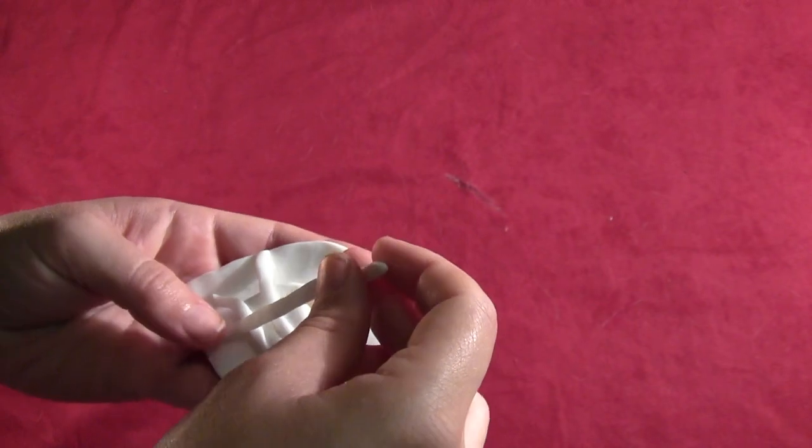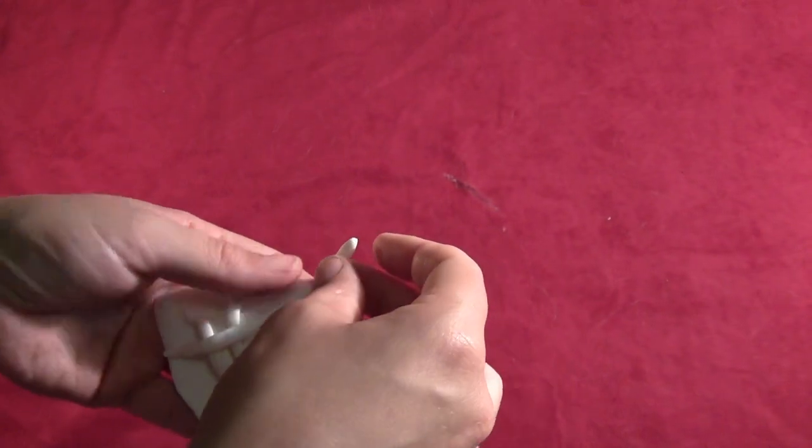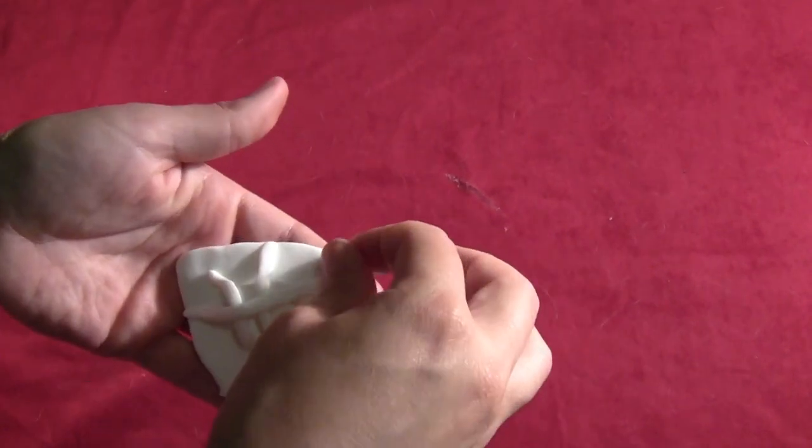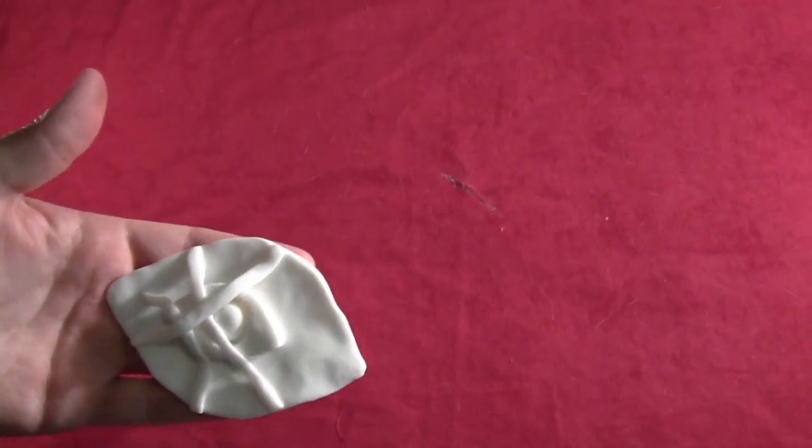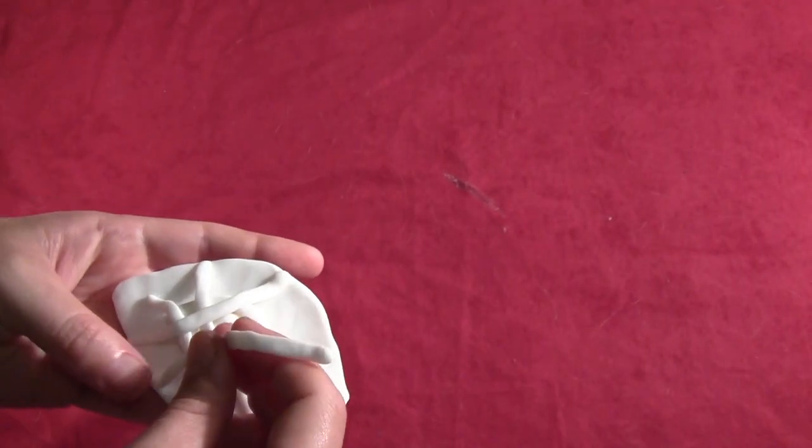And then you lay a third strip going the opposite direction. Just kind of look at the eye to see where you're supposed to lay these strips. And then of course the fourth strip. And that will be the last one.